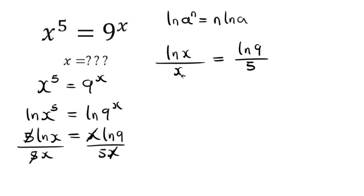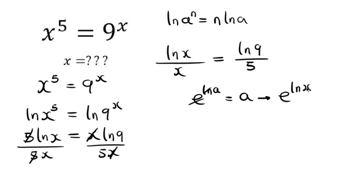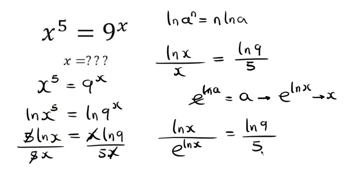I want to express this in a different exponential form. There's a property that says e to the natural log of a equals a — the exponential and natural log cancel, leaving behind a. Applying this to x means x can be written as e to the natural log of x. So I replace x in the denominator with e^(ln(x)), giving ln(x) over e^(ln(x)) equals ln(9)/5.